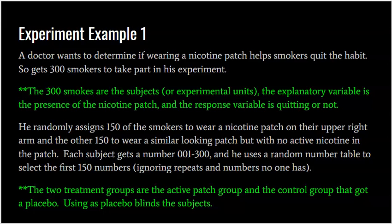Let's make sure we understand why we're using that placebo. If 150 people go home knowing they got nothing to help them quit and the other 150 know they got something, that could become a confounding variable in itself. When you know you got something, you automatically feel like it might help. I can't take that away or give that — it just happens when you work with human beings. By giving everybody something, it levels the playing field and blinds the subjects to what they're getting, forming control.